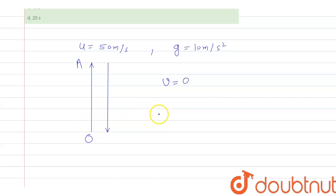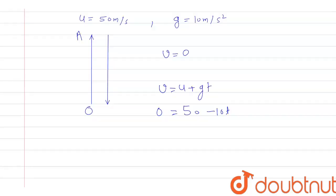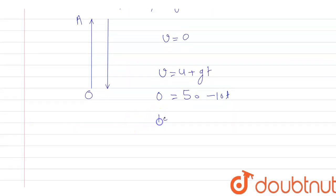By the first equation of motion, we can say that v equals u plus gt. Now, finally at A, the v is zero and u is 50 meters per second. Now when the ball is moving upward, in that case g will be taken as negative, so that is minus 10 times t. Further, 10t equals 50.